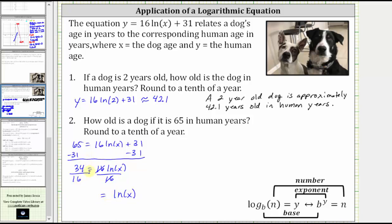This does simplify because 34 and 16 share a common factor of two. 34 sixteenths simplifies to 17 eighths.